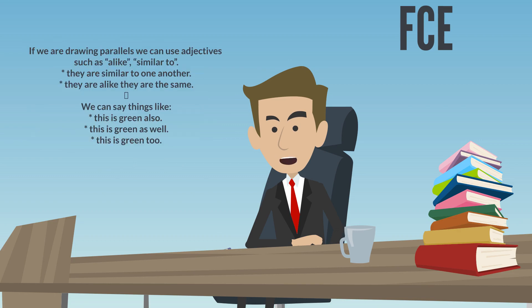If we are drawing parallels, we can use adjectives such as alike, similar to. They are similar to one another. They are alike. They are the same. We can say things like: this is green also, this is green as well, this is green too.